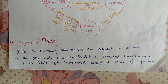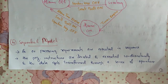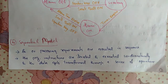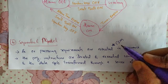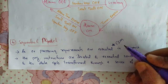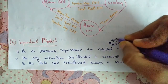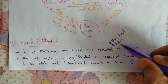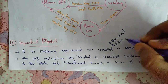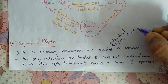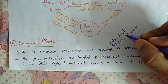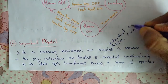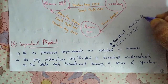Next is the sequential model. Functions or processes are executed step by step. Program instructions are iterated and executed conditionally, and data gets transformed through a series of operations. FSMs are a good choice for sequential program modeling. Flowcharts are another important tool used for modeling sequential programs, representing the execution flow rather than states, events, actions, and transitions.